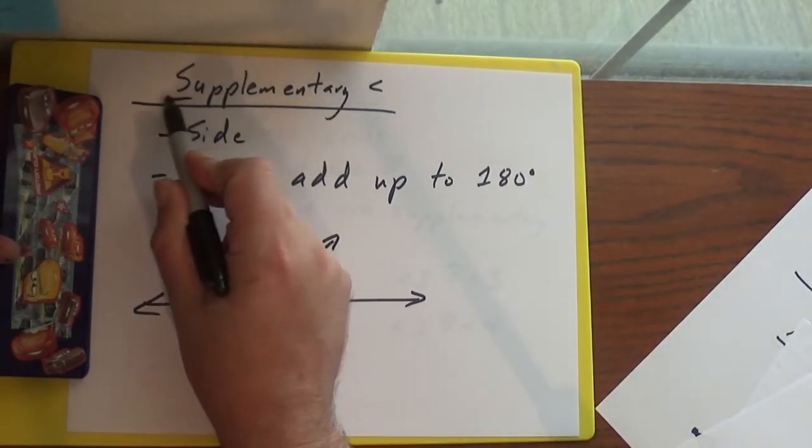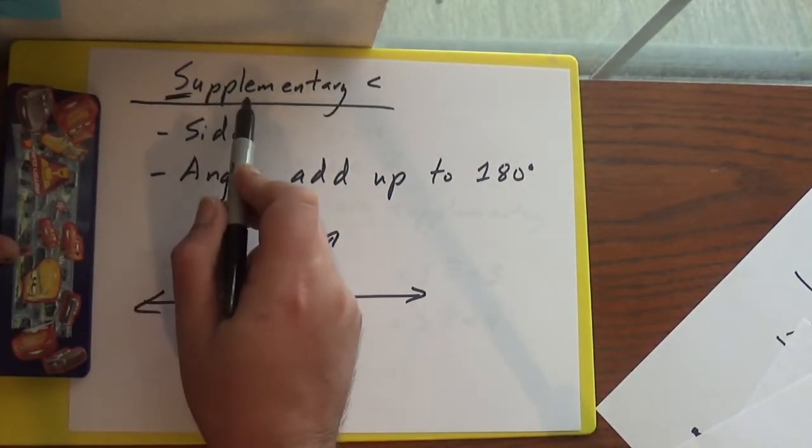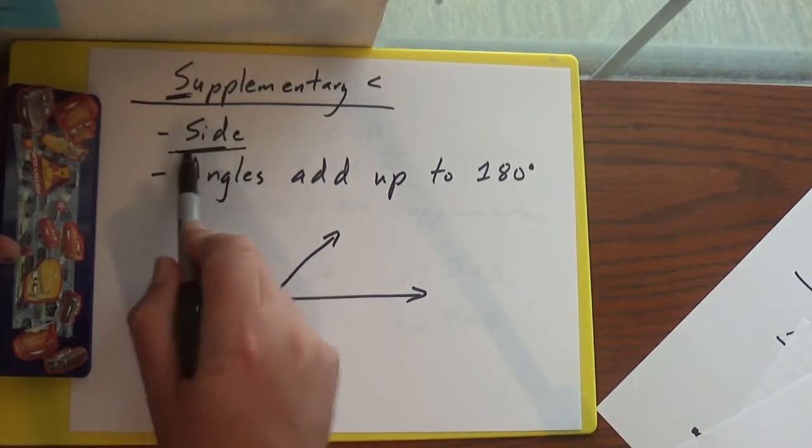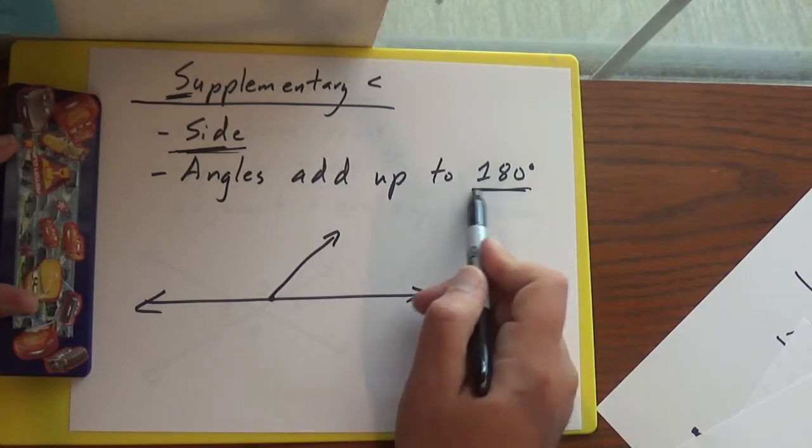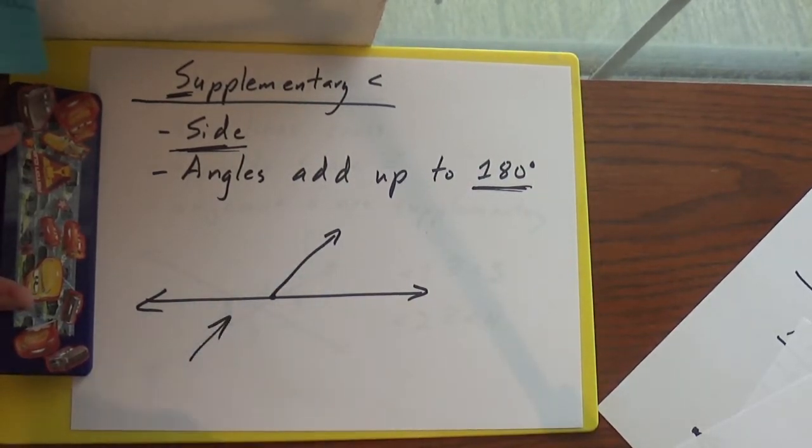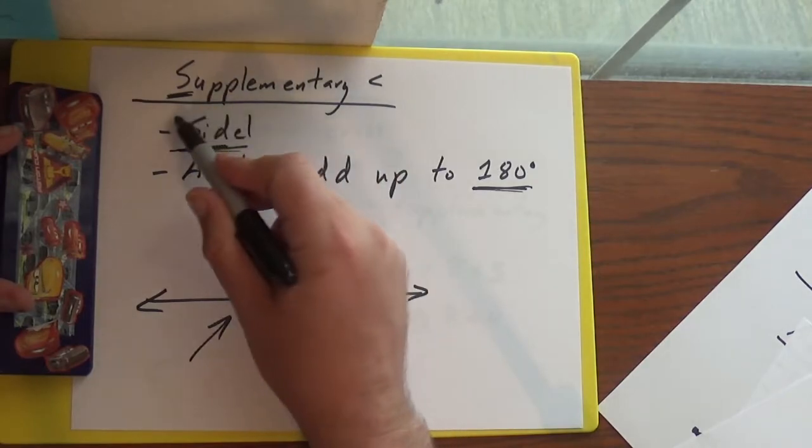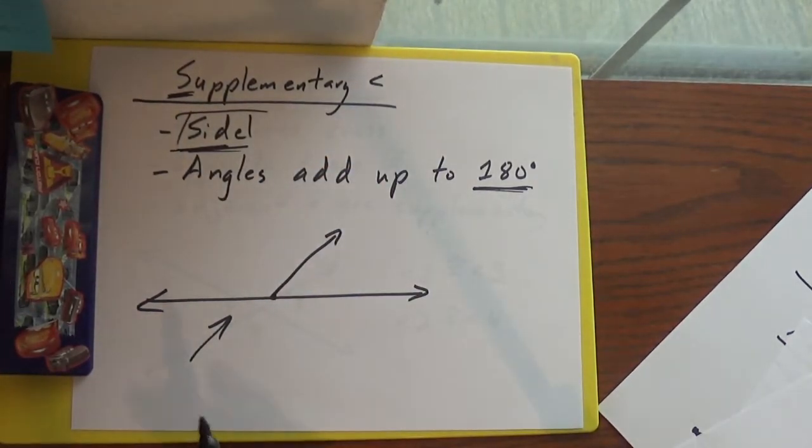Supplementary, just think S for supplementary, S for side. Supplementary angle means they add up to 180. So just like a line is 180, that's why I said think side. Because they add up to 180.